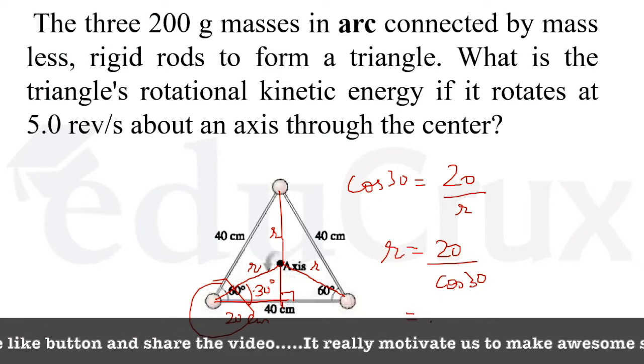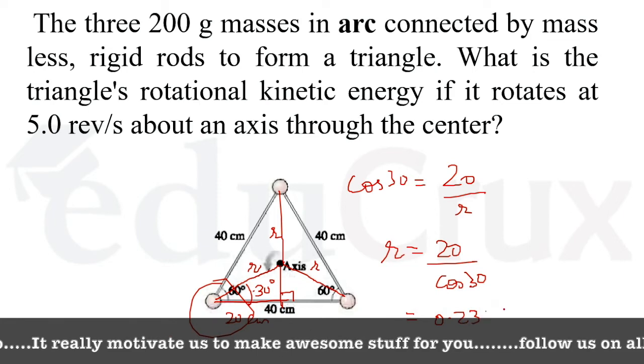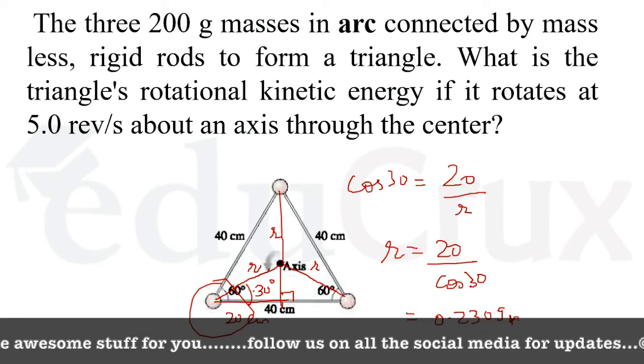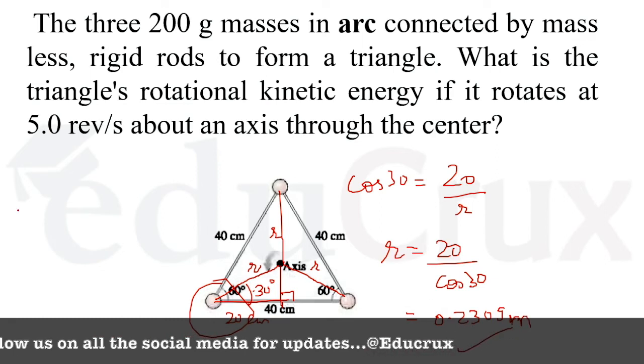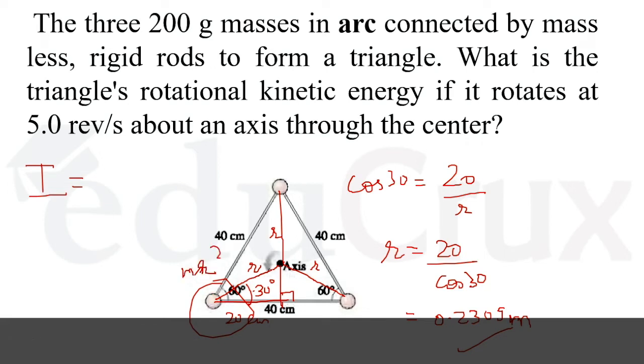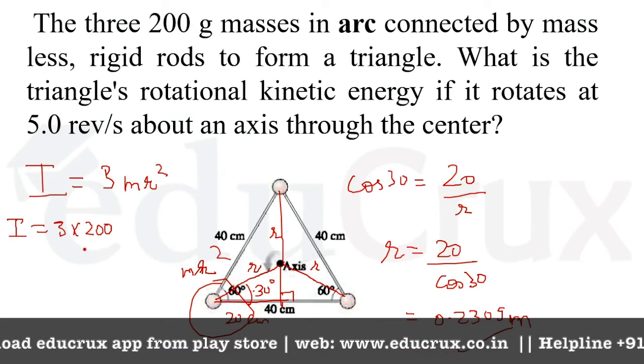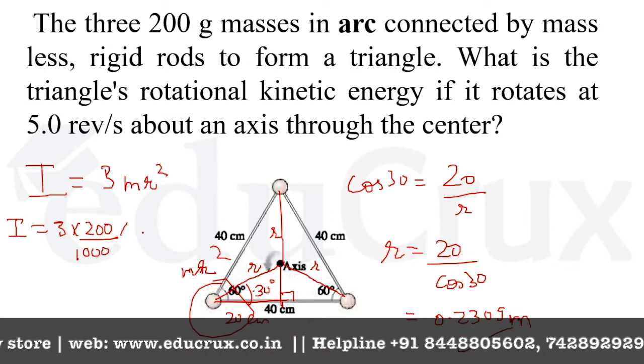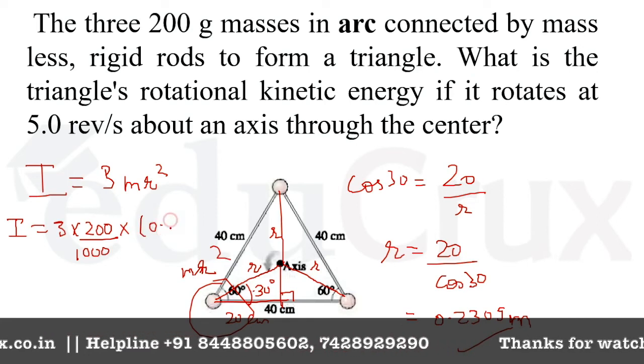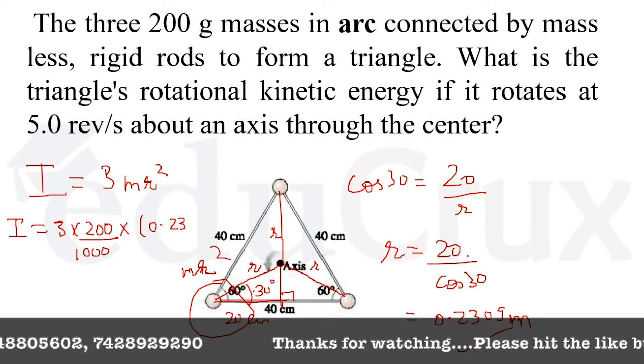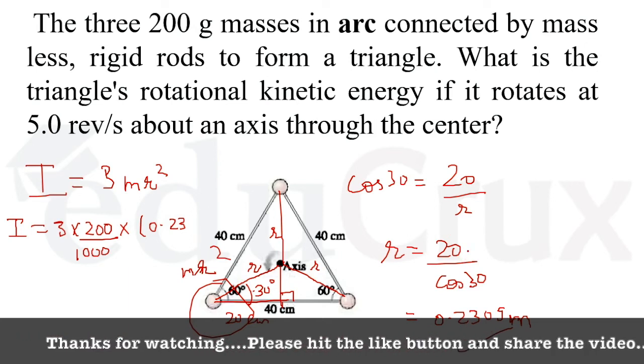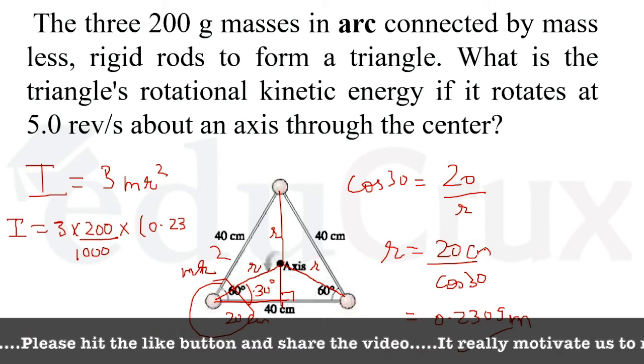When you calculate this you get 0.23309 meters, so this is r. Now for moment of inertia, I equals mr squared where the distance from center is r. For all three balls we multiply by 3, so I equals 3 times m times r squared. So I equals 3 times 200 grams divided by 1000 to convert to kilograms, times r which is 0.23.